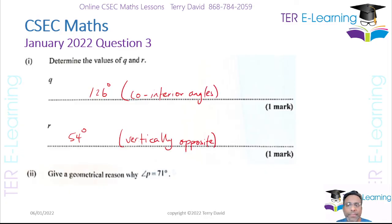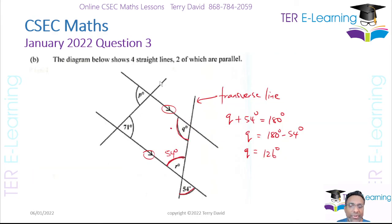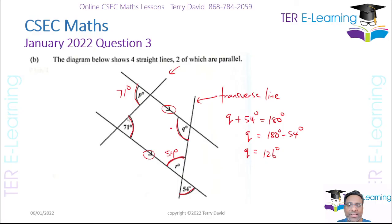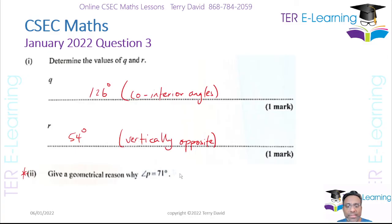Now, give the geometrical reason why angle p is 71 degrees. We have another transverse line — this angle here is 71 degrees and this other angle also has to be 71 degrees. The reason is that p and the 71-degree angle are alternate angles. So all we need to state is: alternate angles.